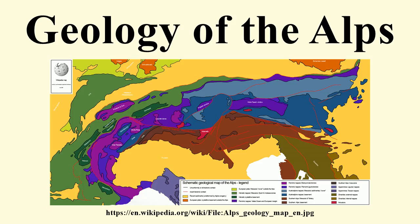Cenozoic eclogites do occur in the Penninic nappes, which contain material that has been through blueschist or eclogite facies. These nappes show a Barrovian field gradient. This type of metamorphism can only occur when a rock is in pressure-temperature conditions that normally occur in the Earth's mantle. This means the Penninic nappes consist of material that was subducted into the mantle and was later obducted onto the crust. Alpine contact or Buchan metamorphism is rare in the Alps because intrusions are rare.